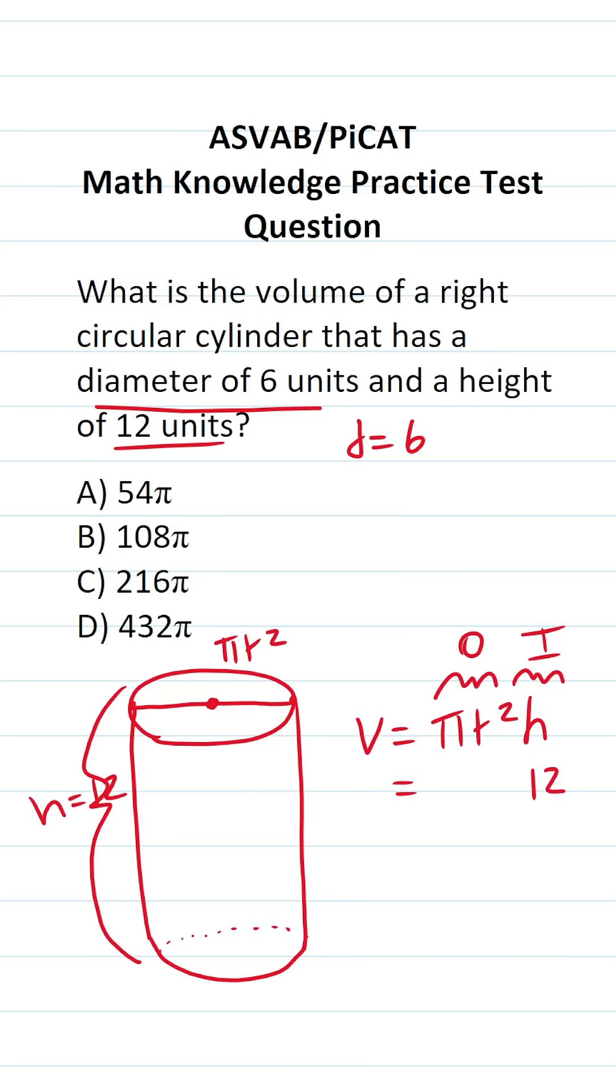For that, you have to know that there is a relationship between the diameter and radius of a circle. The diameter is always twice as long as the radius.